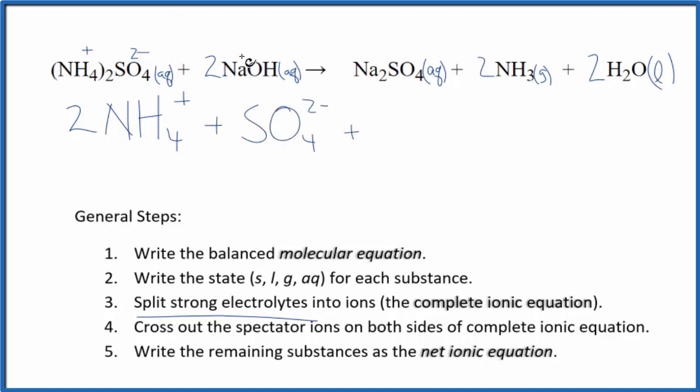Sodium, group one on the periodic table, one plus. And then the hydroxide, that's one minus. So I have two sodium ions and then I also have two hydroxide ions. And these are the reactants in our net ionic equation.